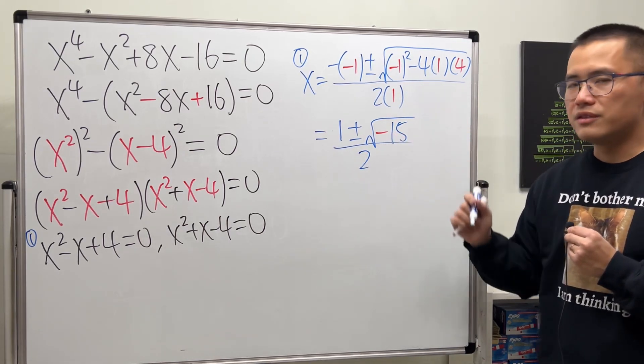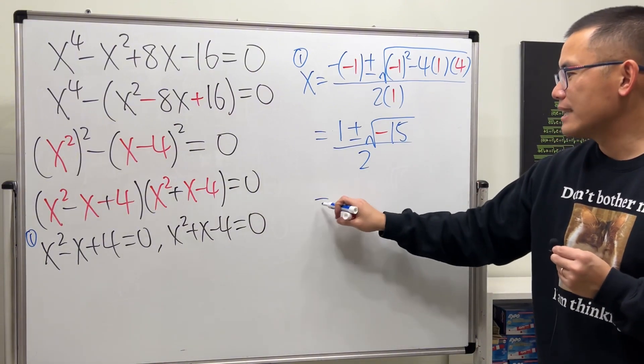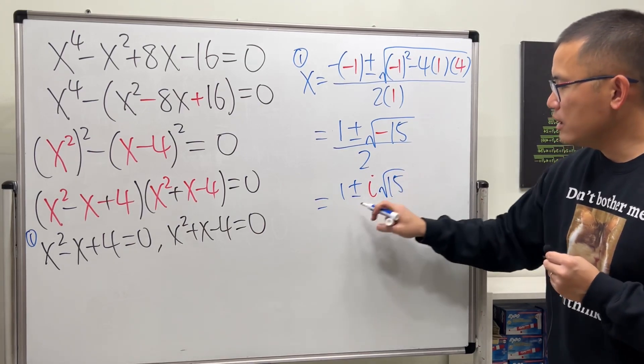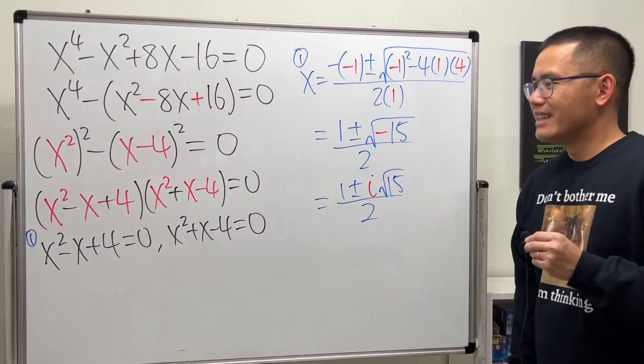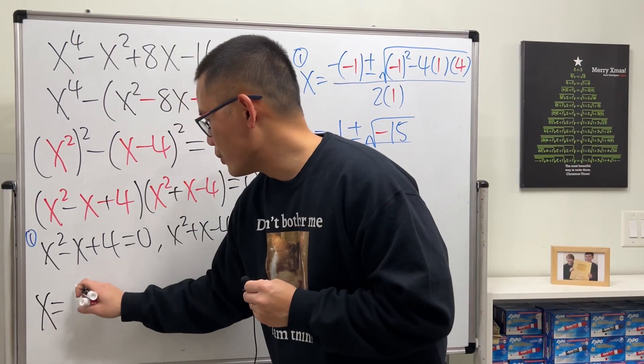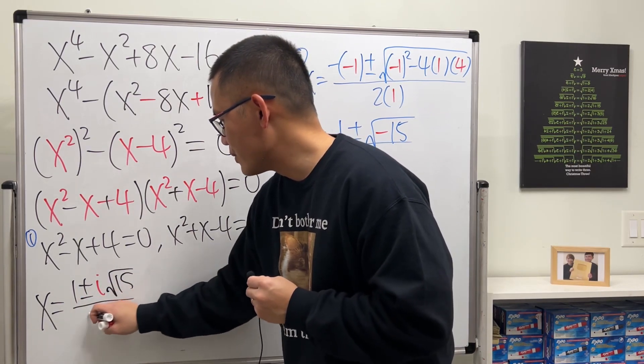Now, because we have a negative under the square root, you know that's the time we get the i. So that's 1 plus or minus i times square root of 15, all over 2. So from here, x is equal to 1 plus or minus i√15 all over 2.